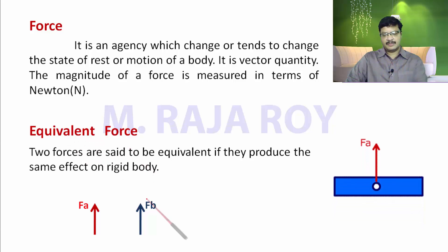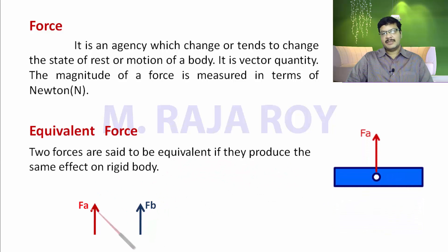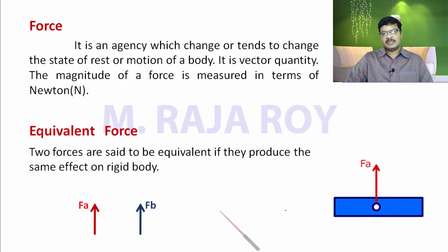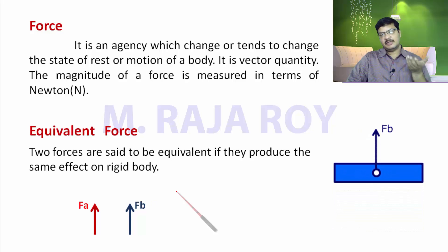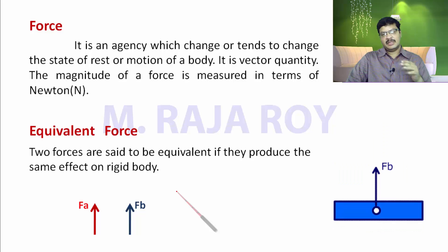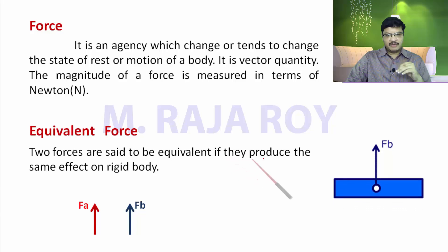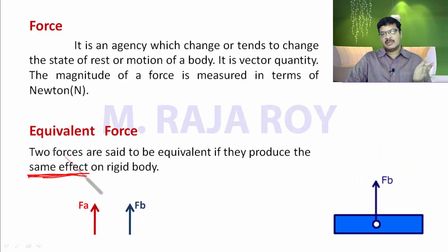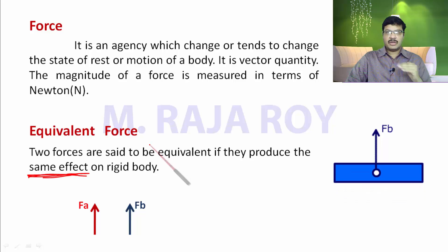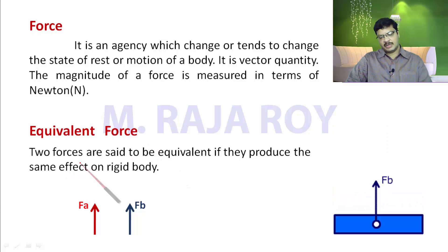What are equivalent forces? Two forces are said to be equivalent if they produce the same effect on a rigid body. For example, Fe lifts the object upward, and FB also does the same — it lifts the object without tilting it. Their effect is the same, so these two forces are said to be equivalent. The key word is same effect on the rigid body. If the effect is same, they are equivalent forces; even if the effect is not same but magnitude and direction are same, they are equal forces. That is the difference between equal and equivalent forces.